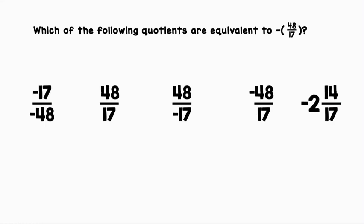Which of the following quotients are equivalent to negative (48 over 17)? We can rewrite that as negative (48 divided by 17). Let's solve this without fully evaluating the expression. Just looking at it, we can tell that our quotient is going to be negative, and larger than 1 since 48 is larger than 17. With those two facts in mind, let's see which options are equivalent.